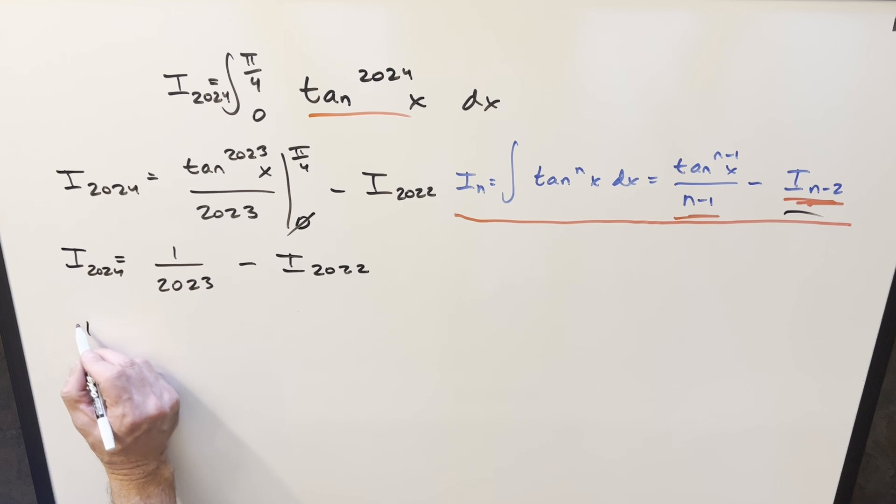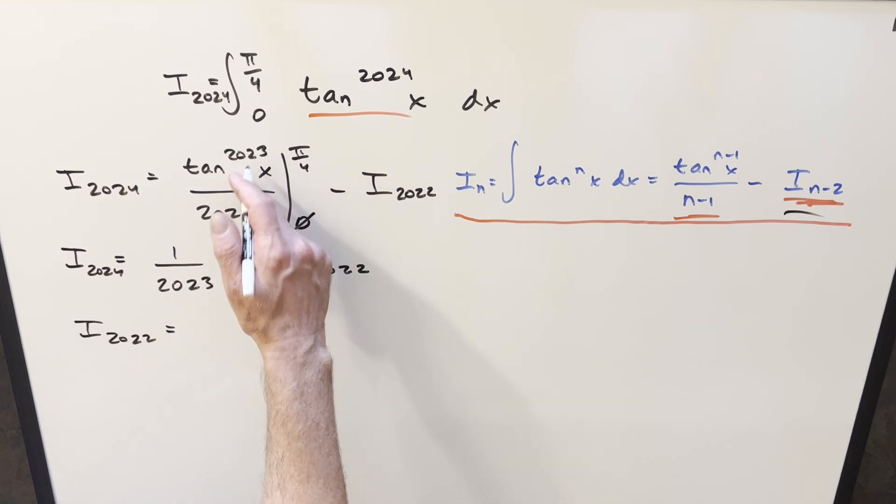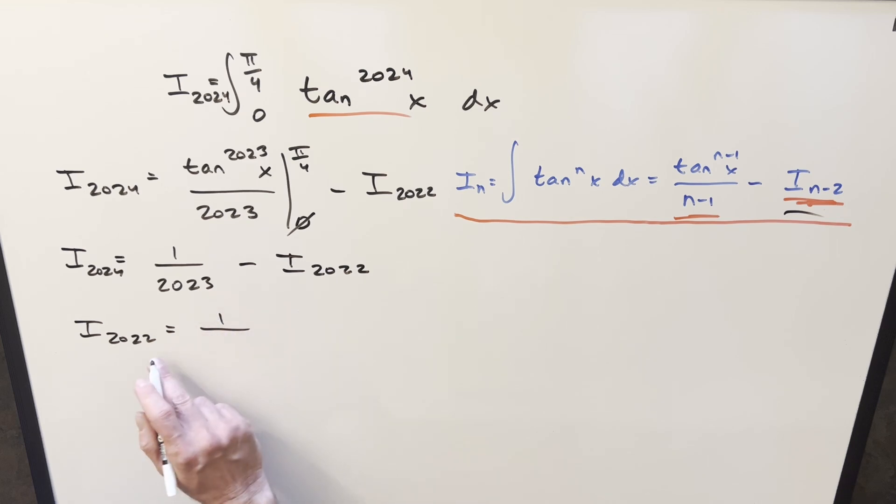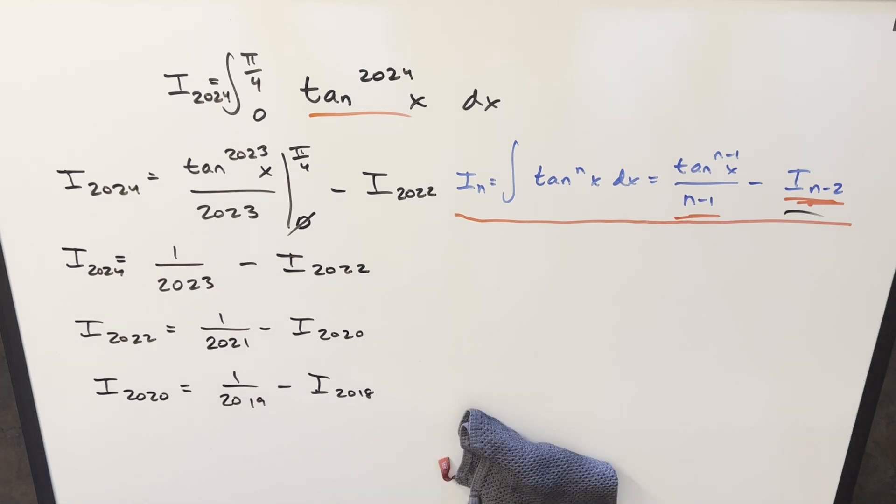Now let's just repeat this again on I_2022 and see what happens. I'm not going to go through the whole exercise, because we can see no matter what we do, the numerator is going to become 1. We get our n-1 in the numerator, so this becomes 2021, and then we're going to have minus I_2020. And it doesn't take too many of these to see the pattern. This is going to become 1 over 2019 minus I_2018.